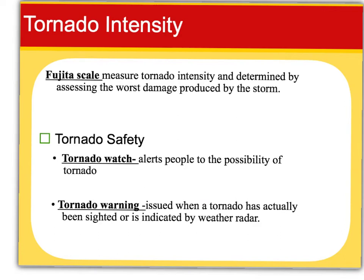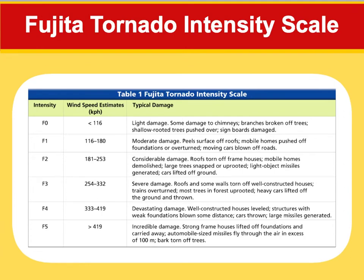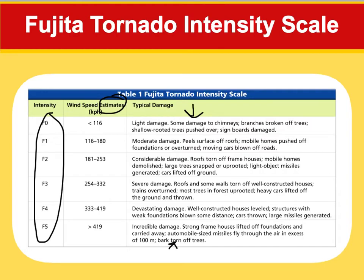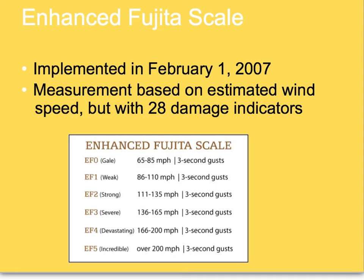Tornadoes are measured using the Fujita Scale, which measures intensity by determining the worst damage produced, because they can't actually measure the winds directly. A tornado watch alerts us to the possibility that one could happen, while a warning means a tornado has been sighted or indicated by weather radar. The Fujita Scale ranges from F0 to F5, based on damage caused. Recently, an enhanced Fujita Scale was implemented as of 2007, still based on estimated wind speed, but now with 28 damage indicators.